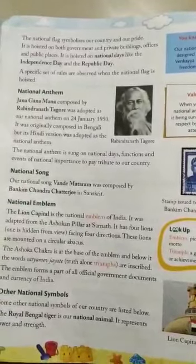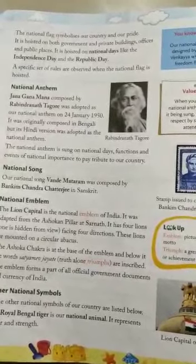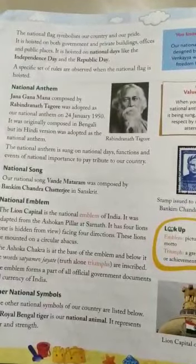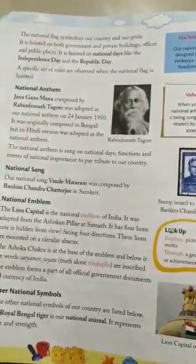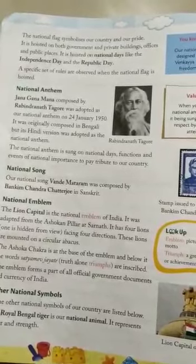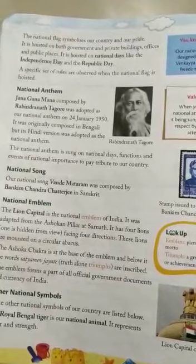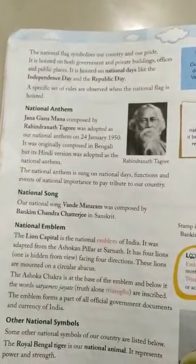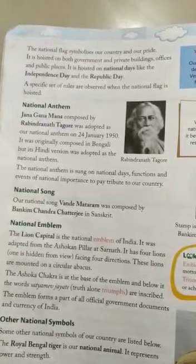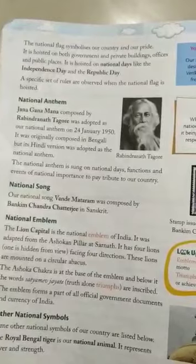The next national symbol is the national anthem. Jana Gana Mana is our national anthem, which was composed by Rabindranath Tagore and was adopted as our national anthem on 24th January 1950. This national anthem was originally composed in Bengali, but its Hindi version was adopted as the national anthem. Rabindranath Tagore composed our national anthem. The national anthem is sung on national days, functions, and events of national importance to pay tribute to our country.